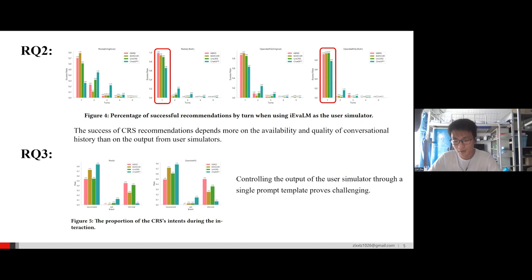To answer the second question, we counted the number of interaction turns used in successfully recommended conversations. If the CRS successfully recommends on the first round, it suggests that the CRS can make successful recommendations using all the information from conversational history. As can be seen in Figure 4,